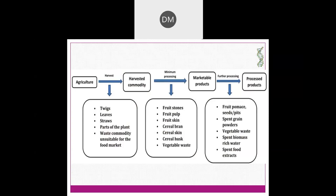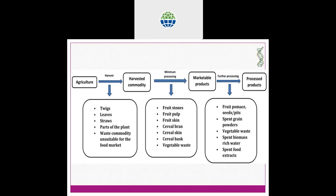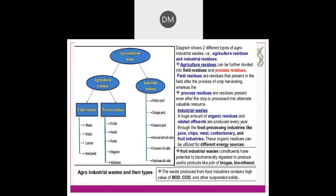This chart shows the stages where we are losing food. Starting from agriculture and harvesting, several food wastes are generated — like twigs, leaves, and parts of the plant unsuitable for the food market. When harvested products go to marketable stages, a huge amount of byproducts and wastage are also generated in the form of food stones, food pulp, and fruit skin. When marketable products are processed and converted to processed products, again huge amounts of byproducts are generated. At each and every stage from agriculture to processed product, a huge amount of byproducts is generated.